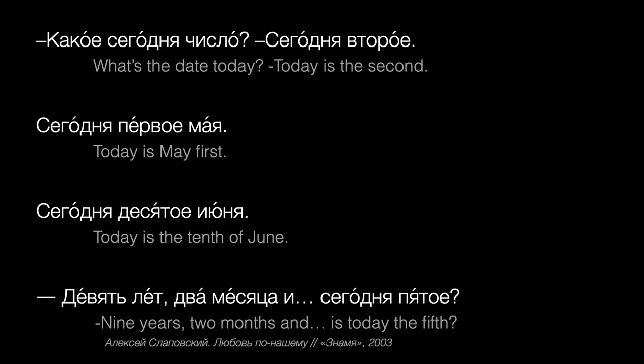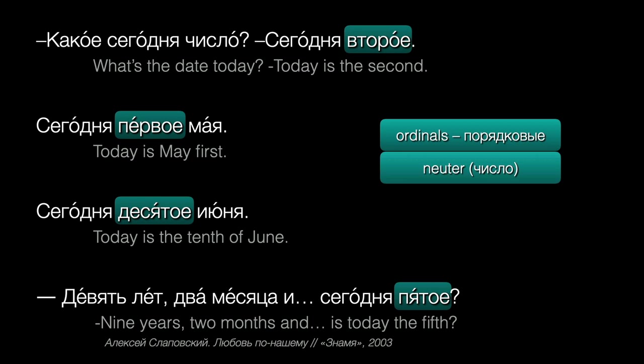Just as in English, where we talk about the first, second, tenth, or fifth day of the month, in Russian we'll use ordinals — порядковые. We're using the neuter form of the ordinal to agree with число, which is implied but most often left out in the answer.